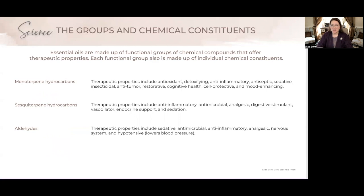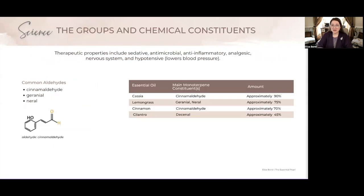Let's look at our last functional group — the aldehydes. The therapeutic properties for aldehydes include sedative, antimicrobial, anti-inflammatory, analgesic, nervous system support, and hypotensive, meaning it can support lowering blood pressure. Individual oils in this category include cassia, lemongrass, cinnamon, and cilantro. Some of the common aldehydes are cinnamaldehyde, geranial, and neral. It's wonderful to know that our oils have the chemistry we need to support so many of our challenges.